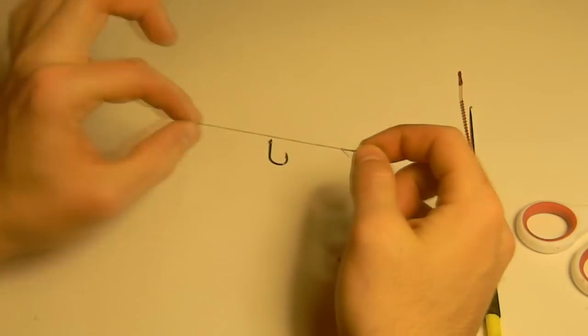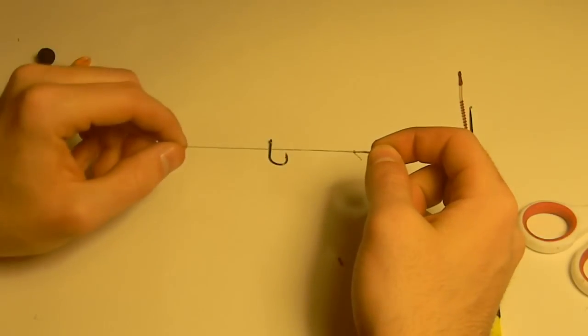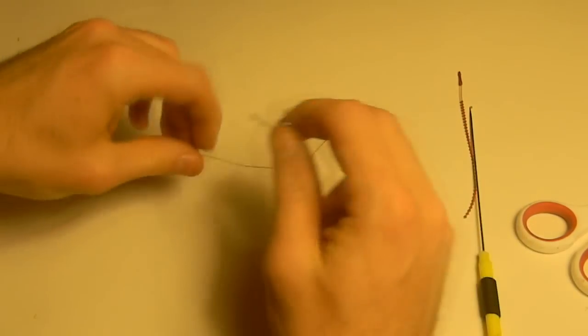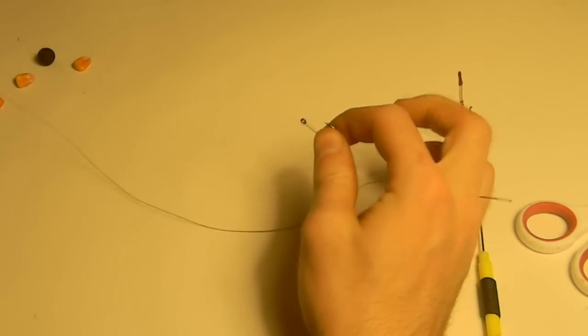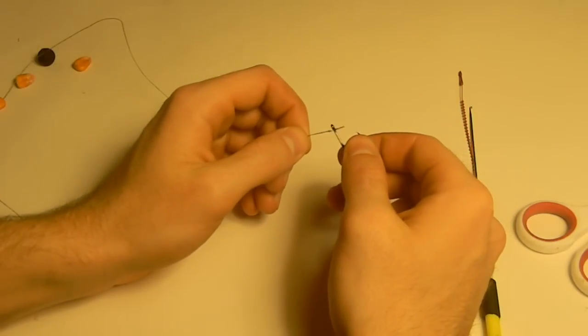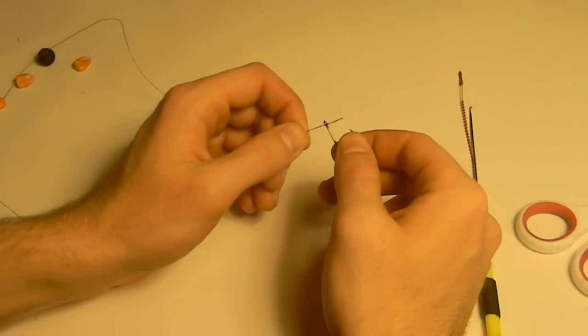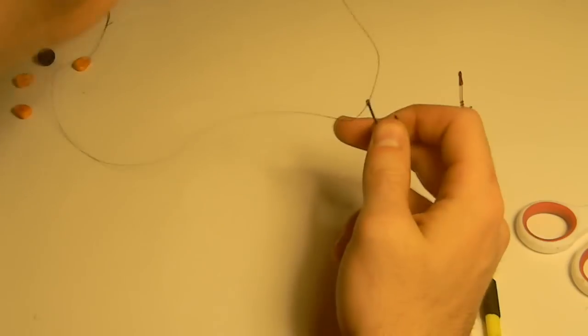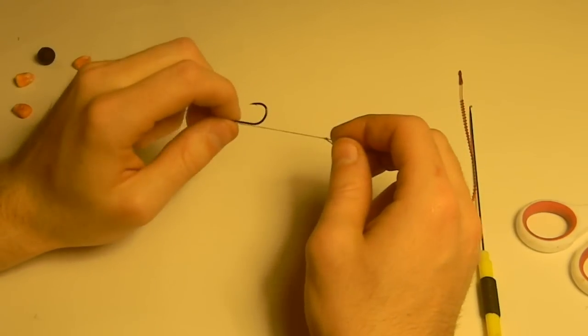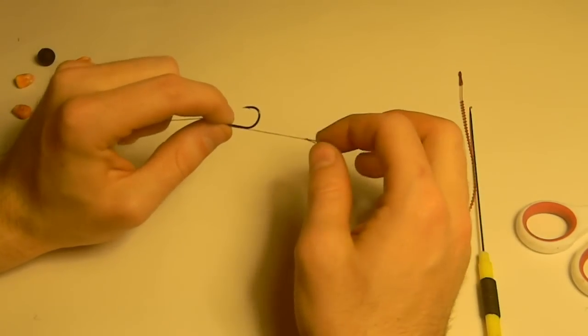Now, we have a piece of line with a loop on the end. Our next step is to make the knotless knot. How you do that is you're going to grab your hook. You're going to take the other side of your line. You're going to thread your line through the eye towards your hook point. You're going to pull it all the way through until you have about maybe two or so inches off your eye.